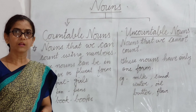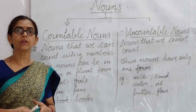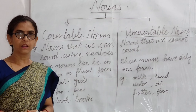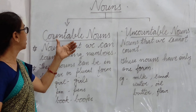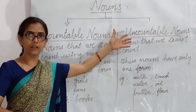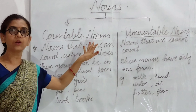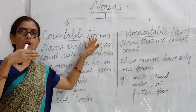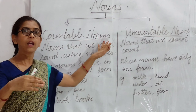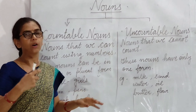Hello students, today I will explain you about noun and its types. There are two types of nouns: countable nouns and uncountable nouns. Before I explain you about countable nouns and uncountable nouns, I want to tell you about what nouns are.